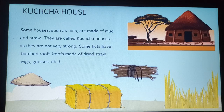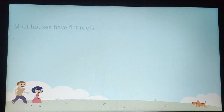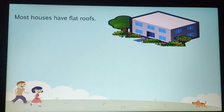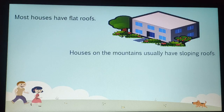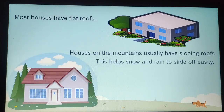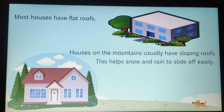Most houses have flat roofs — here you can see a flat roof. Houses on the mountains usually have sloping roofs. This helps snow and rain to slide off easily. In mountain areas, they mostly have sloping roofs so that snow and rain can move down easily.